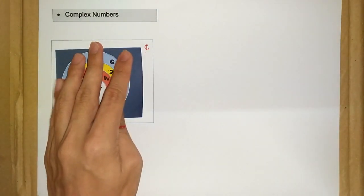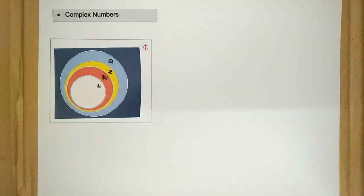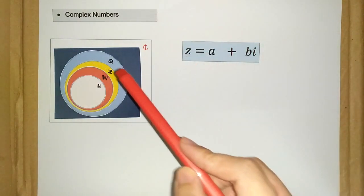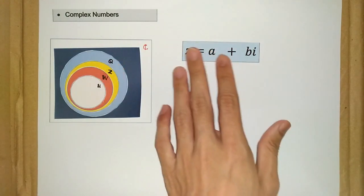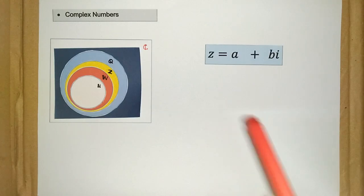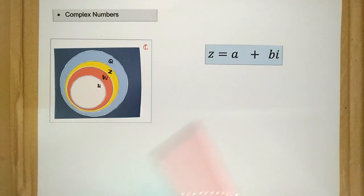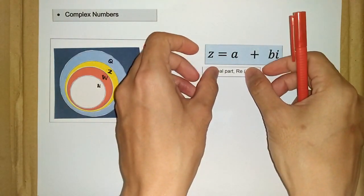We denote complex numbers with capital C, and we also denote complex numbers with z — small z. The capital Z is for integers and the small z is for complex numbers. Complex numbers take the form of a plus bi, where A is what we call the real part of the complex numbers.